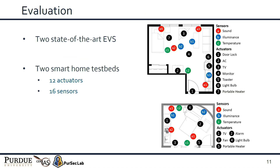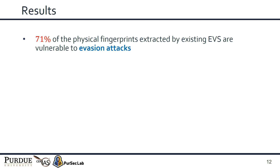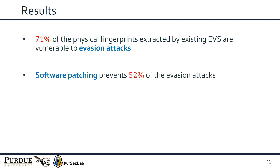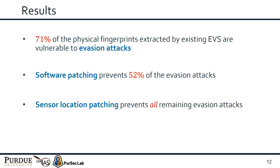We evaluated our robust fingerprinting system in two smart home test beds, using two state-of-the-art event verification systems — one rule-based using statistical rules, and one machine-learning-based. Our evaluation showed that 71% of physical fingerprints on average extracted by these two EVS were vulnerable to evasion attacks, and they were vulnerable to similar types of evasion attacks across both systems. Software patching was able to prevent 52% of the evasion attacks, but was unable to prevent the others due to indistinguishable aggregated influences. Sensor location patching prevented all remaining evasion attacks.